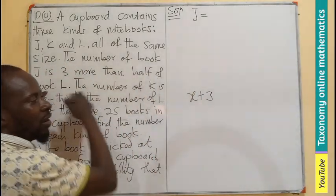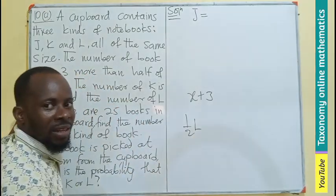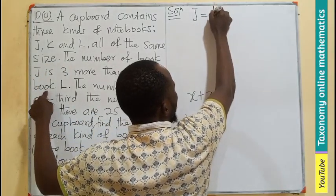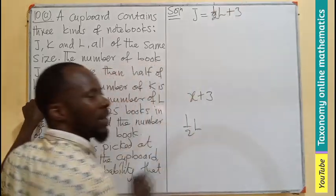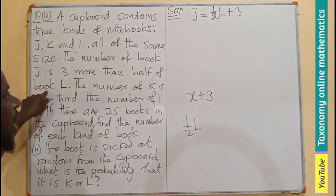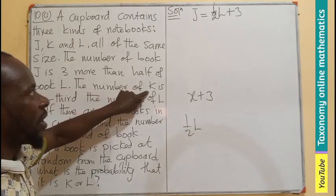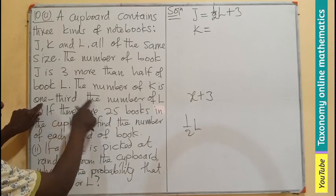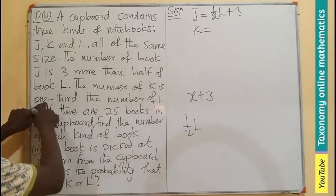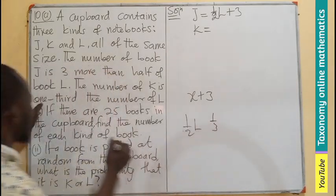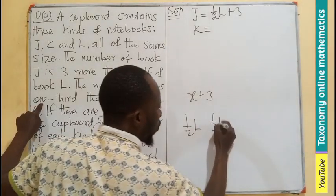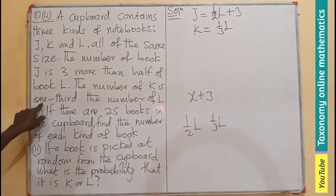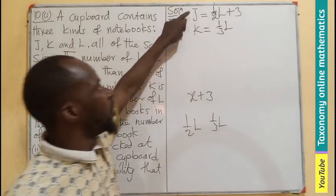So three more than half of book L means J equals half of L plus three. Then book K is one-third the number of book L, so K equals one-third of L. Both J and K are defined in terms of L.